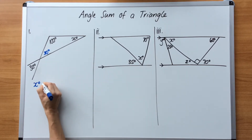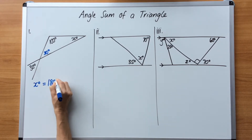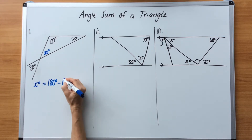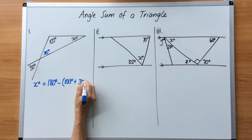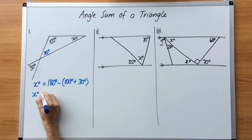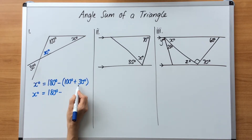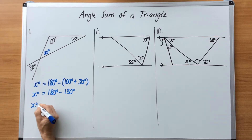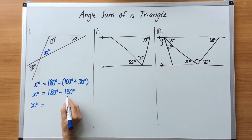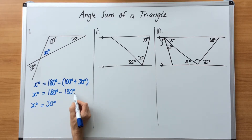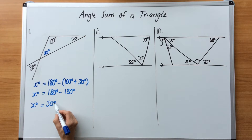Now we can solve x. x degrees equals 180 minus — brackets — the sum of the other two that I know, which is 100 degrees plus 30 degrees. x degrees equals 180 degrees minus the sum of these two angles, which is 130 degrees. x degrees equals 180 minus 130, which is 50 degrees. It's essential that you use the degree symbol throughout all of these questions — if you miss this off in an exam, you will lose marks.